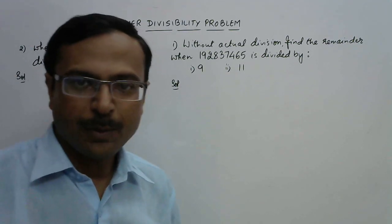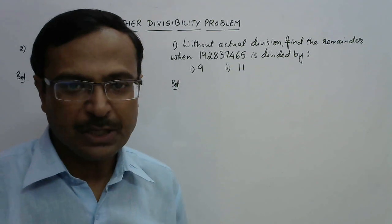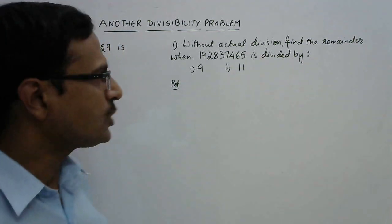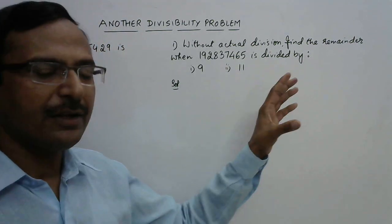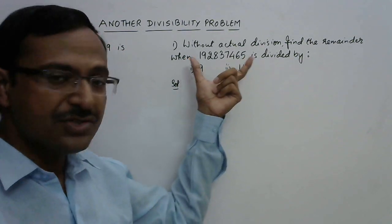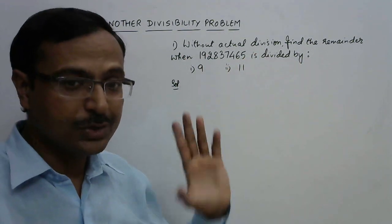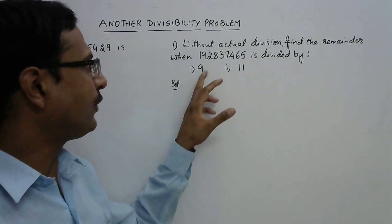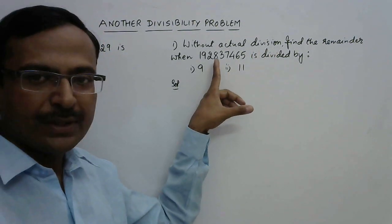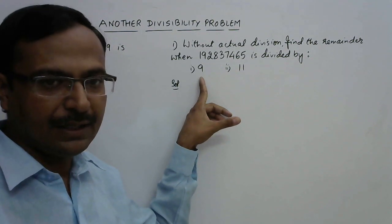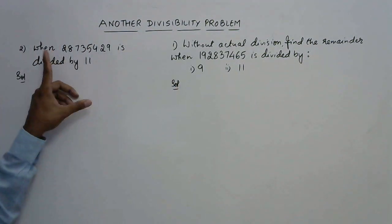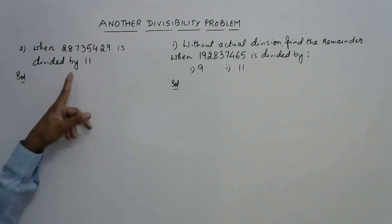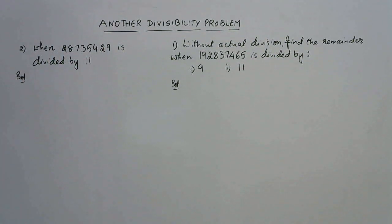Hello friends, another problem based on divisibility rules. This time I am going to take up a problem in which we have to find the remainder when a large number is divided by a given number whose divisibility rule is known. Like we have to find the remainder when this number is divided by 9 and by 11. Let us see how we can solve this question within very less time.